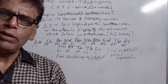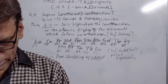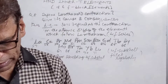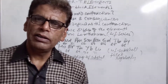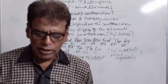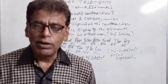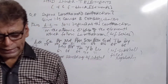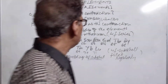Due to lanthanoid contraction, the chemical properties of these elements become similar and their separation becomes difficult. Their electronegativity, ionization energy, and basic strength of hydroxides remain almost similar. The sizes of 4D and 5D series elements also become almost similar as a consequence.